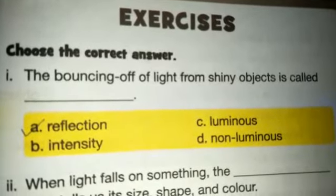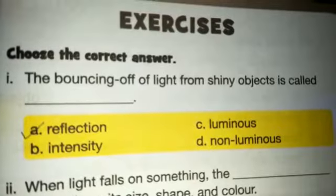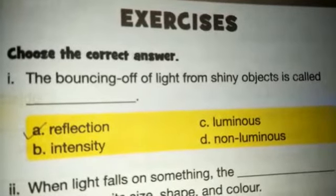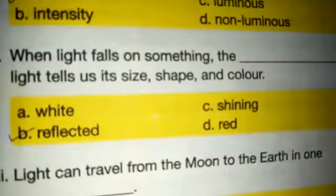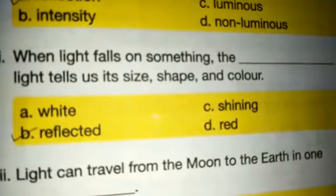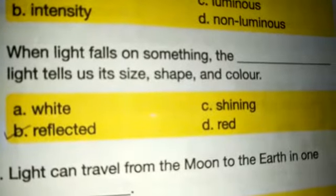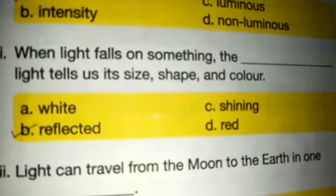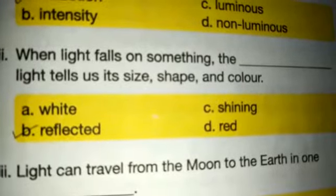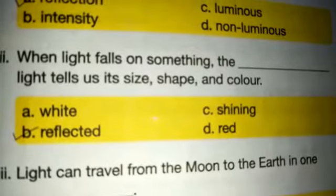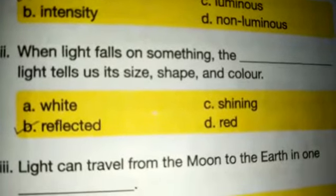The correct answer is A) reflection. Next question: when light falls on something, the dash light tells us its size, shape and colors. Options are: A) white, B) reflected, C) shining, D) red. The correct answer is B) reflected.